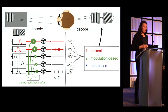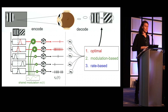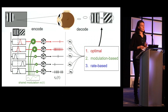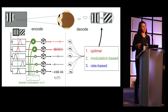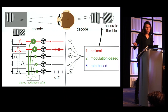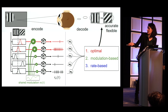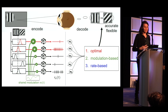This leaves us with three decoders: the optimal decoder (maximum likelihood or regression), the modulation-based decoder, and the rate-based decoder. Each is a linear weighted sum of the responses; however, they differ with respect to their biological plausibility because they make different assumptions about what the decoding population needs to know about the encoding population. We will now simulate responses from such a modulated Poisson encoding model and test the different decoders with respect to accuracy and learning efficiency.